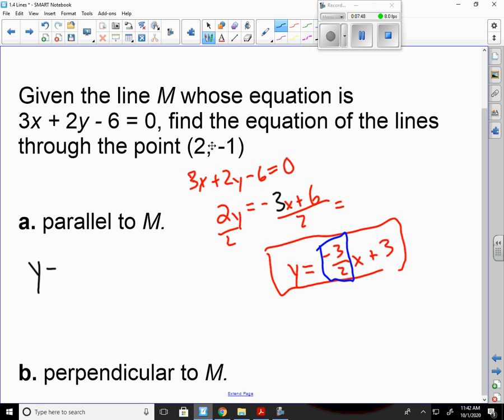Y minus the y-coordinate of my point, negative 1, equals the slope, negative 3 over 2, times x minus x1, which is 2.